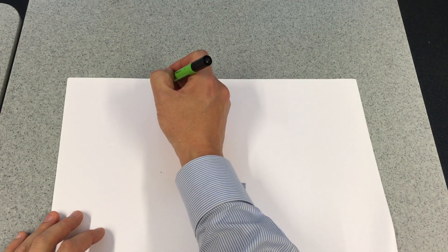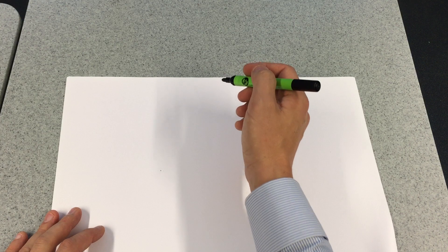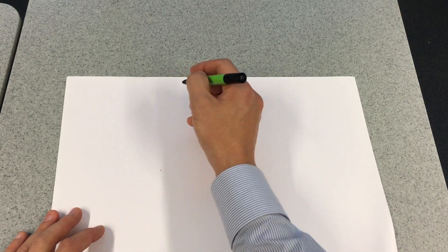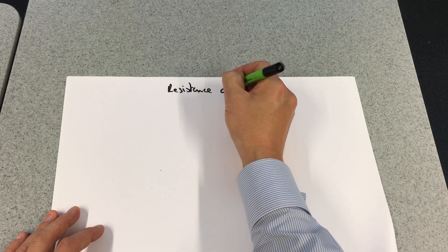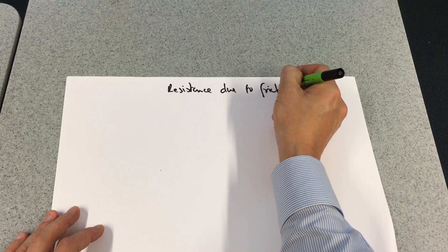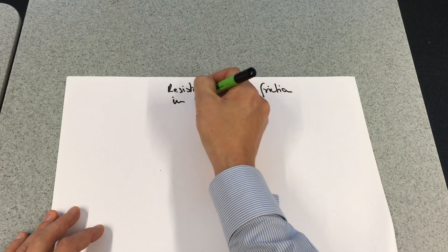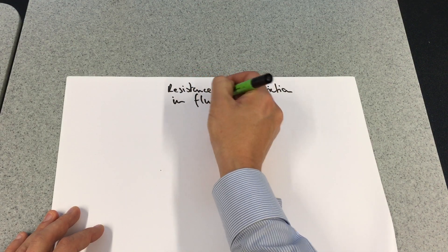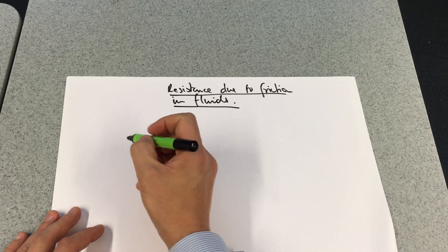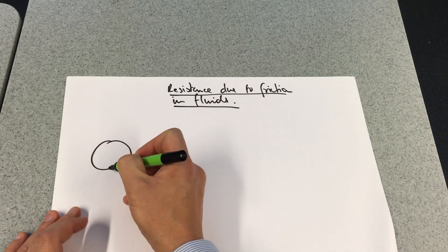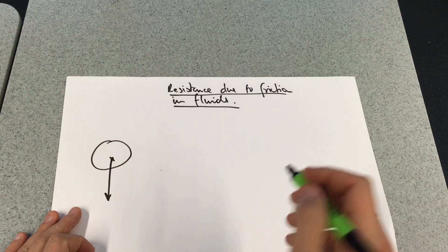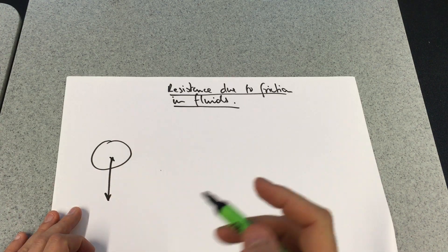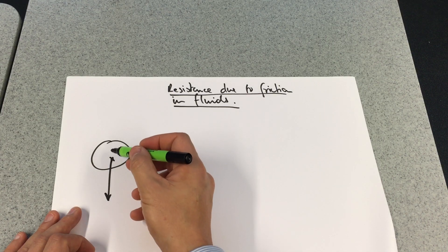This is a video looking at resistance to motion due to friction in fluids. We're going to be looking at objects that fall through air and objects that fall through liquids. Let's deal with the liquid one to start with.